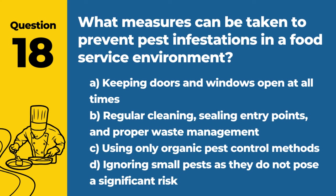Question 18. What measures can be taken to prevent pest infestations in a food service environment? Answer: B. Regular cleaning, sealing entry points, and proper waste management. These practices help eliminate food sources and entry points for pests, reducing the risk of infestation.